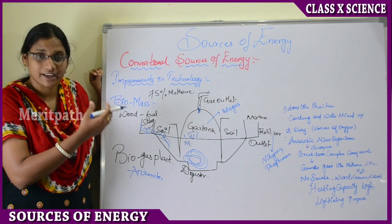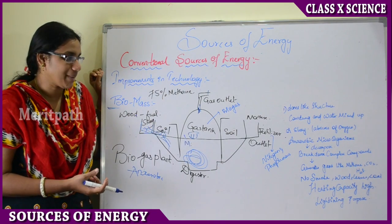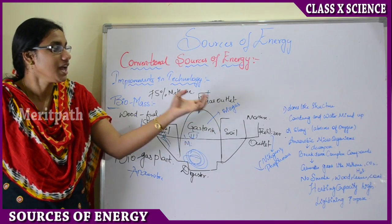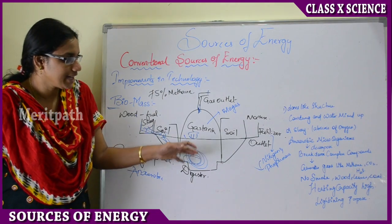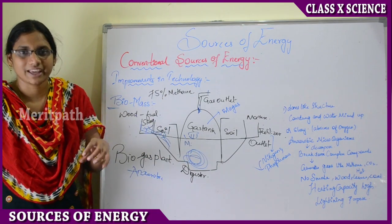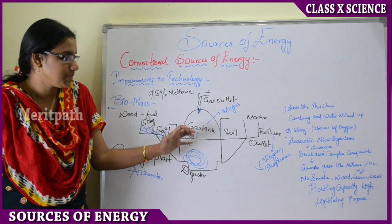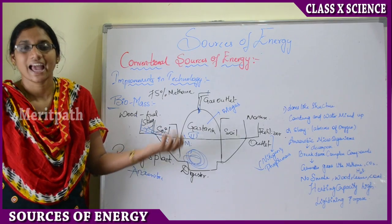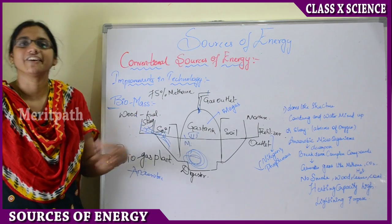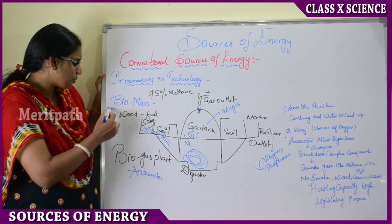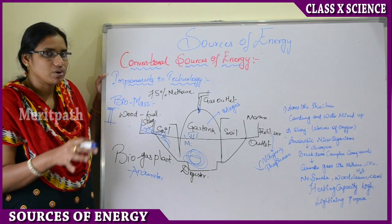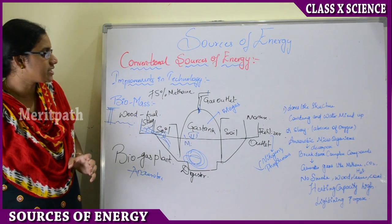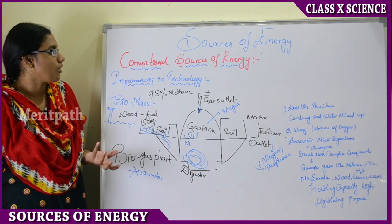The waste coming out of the digester is used as manure or fertilizer for crops, as it is rich in nitrogen, potassium, and phosphorus, making it useful for agricultural purposes. There is no smoke, no wood, no leaves, no charcoal, and no carbon produced. This biogas equipment is mostly found in rural villages where there is high availability of organic material, rather than in urban areas.